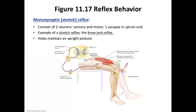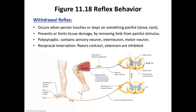Another reflex type is the withdrawal reflex. This happens when a person touches something painful and potentially damaging, such as stepping on a tack or a shard of glass. Activated skin receptors send impulses to the spinal cord along the axons of sensory neurons. There, the sensory neurons synapse with interneurons, which in turn synapse with motor neurons. The motor neurons activate fibers in the flexor muscles of the thigh, which contract in response, pulling the foot away from the painful stimulus. Skeletal muscles are typically innervated by motor neurons at more than one level of the spinal cord — this is called segmental innervation.